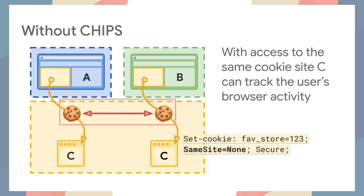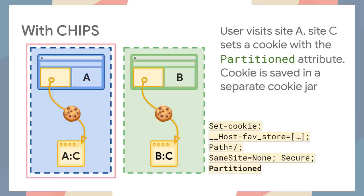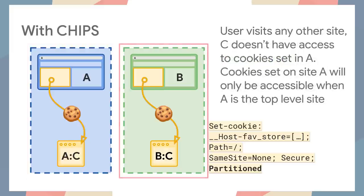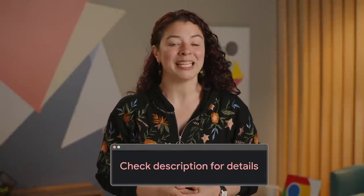While cross-site tracking is an issue, there are valid cross-site cookie needs which can be achieved in a privacy-preserving way with cookie partitioning. With CHIPS, when a user visits Site A and embedded content from Site C sets a cookie with the partition attribute, the cookie is saved in a partition jar only for cookies that Site C sets when it's embedded on Site A. When the user visits a new site, for example Site B, Site C would not receive the cookie that was set when C was embedded in Site A. Check out the link in the description for all details about this step into deprecating third-party cookies.